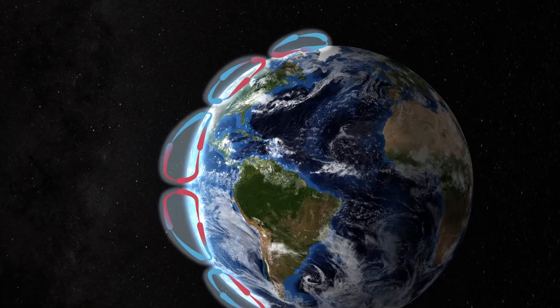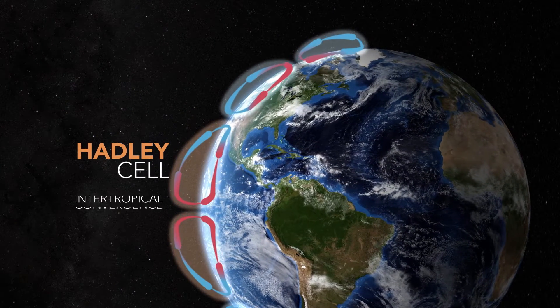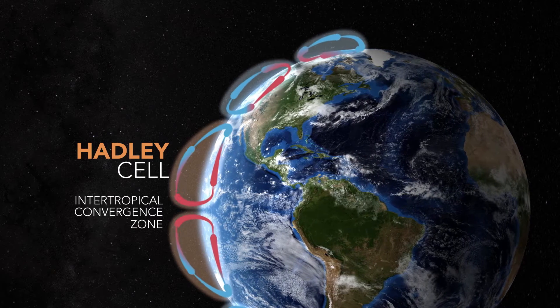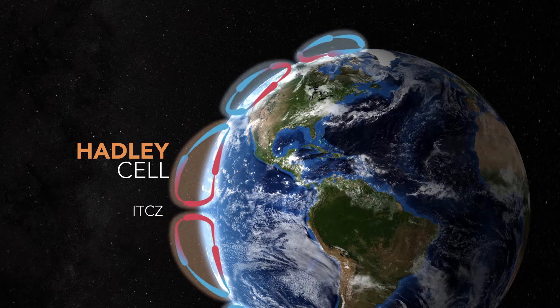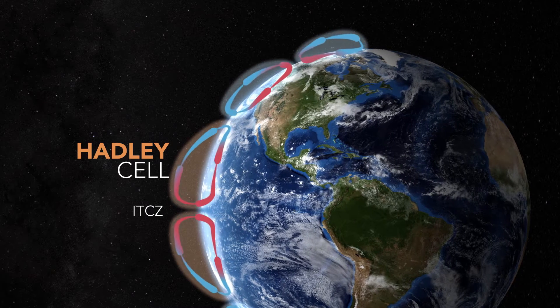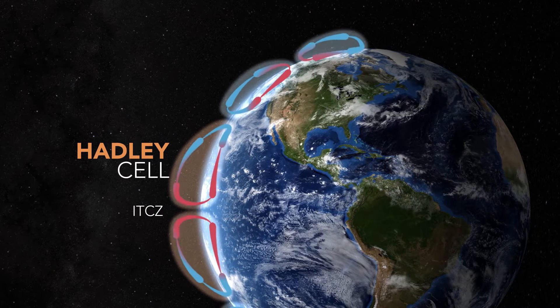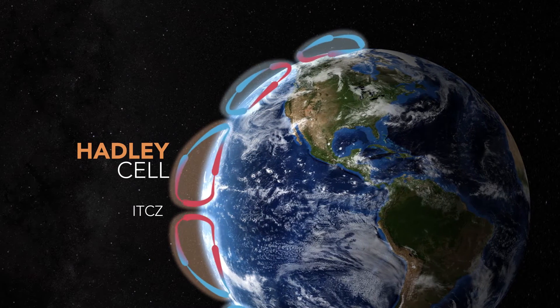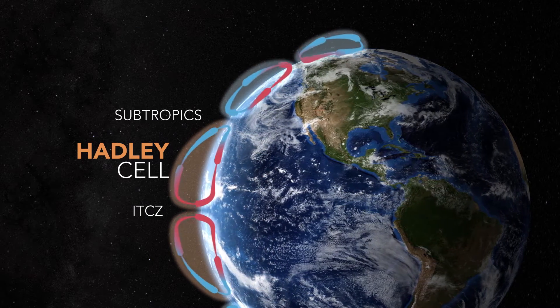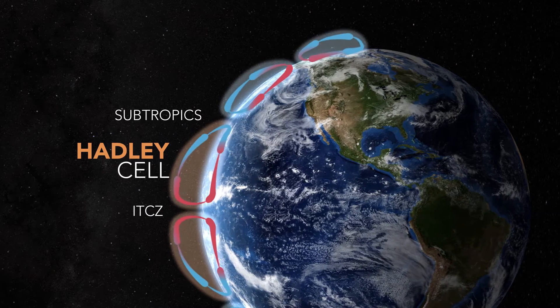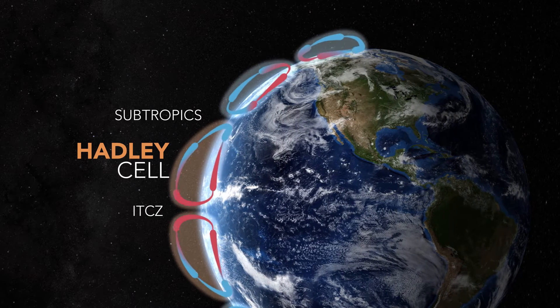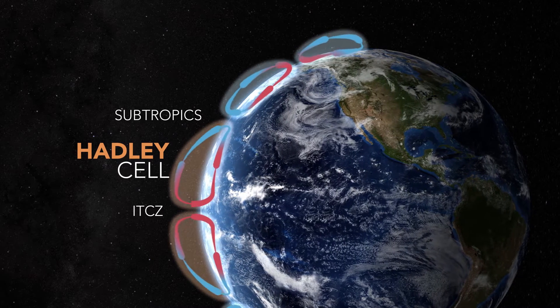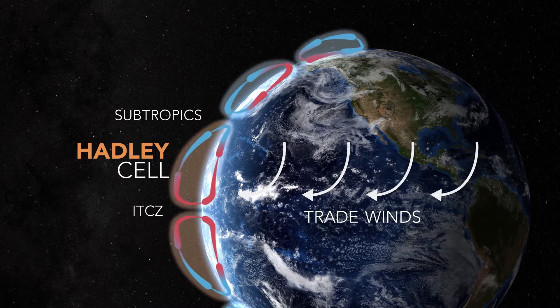The tropical circulation is called the Hadley cell. Air rises in the intertropical convergence zone, or ITCZ, near the equator. The ITCZ is very rainy, and thus many of the world's luscious rainforests tend to be located in this region. The descending branch of the Hadley cell is located over the subtropics. This subsiding air tends to be very warm and dry, and is at the latitude where many of the world's deserts are. A band of easterly winds, known as the trade winds, form between the rising and the descending branches due to the rotation of the Earth.